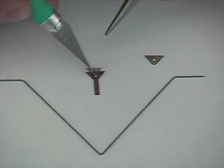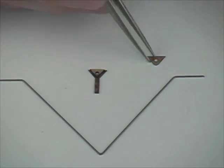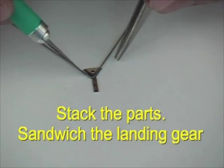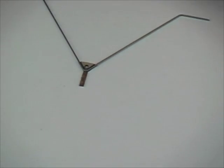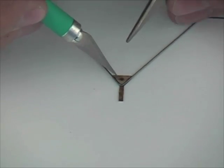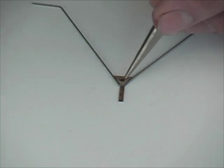The landing gear goes together quite easily. We take the small plywood laser cut parts and stack them up, making a sandwich with the metal landing gear in the middle. We apply CA liberally here. We're going to soak it with thin CA and that will really harden it up and add strength.